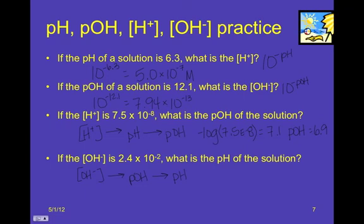And I would rather do simple math that I can do in my head without having to punch buttons in the calculator than have to push buttons on the calculator. So, that's the only reason that I'm skipping that whole 1 times 10 to the negative 14 thing. So, to get from hydroxide ion concentration to pOH, I'm going to take the negative log of 2.4 times 10 to the negative 2. And that's going to give me a pOH of 1.6.